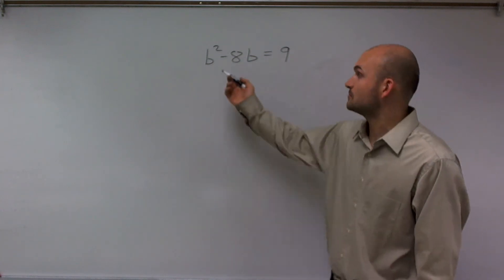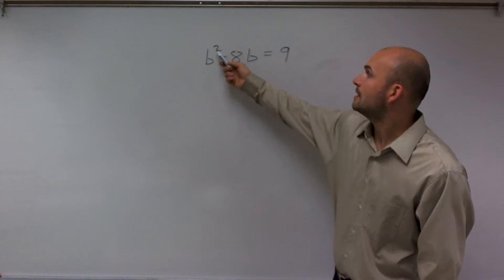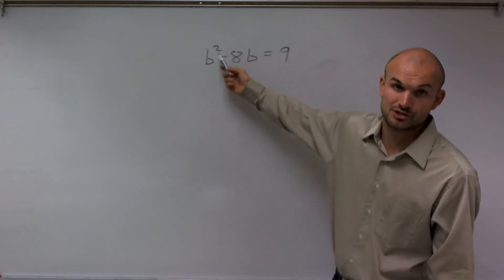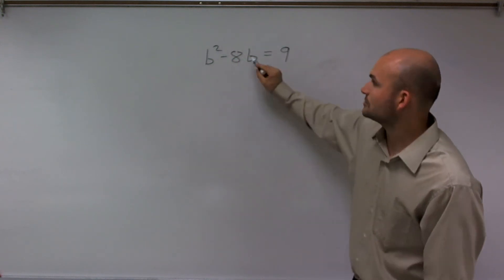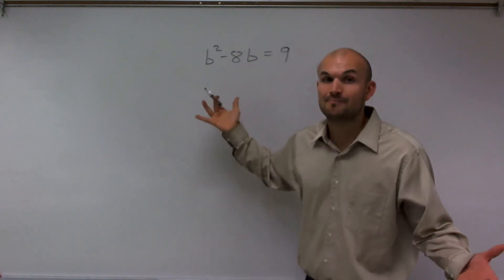This comes to a problem because, one, this is not linear - the power for b is 2 up here. And also, we have two of them which we cannot combine into one.